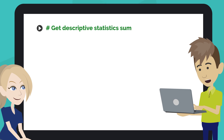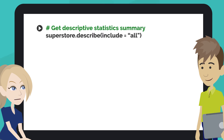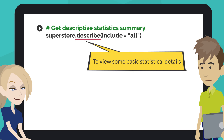Type the code like this into the next code cell of your notebook. This code gets the Descriptive Statistics Summary. Pandas describe views some basic statistical details like percentile, mean, STD, etc. of a data frame or a series of numeric values. If you want to include all columns in describe, then set include equals all.